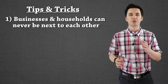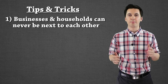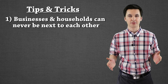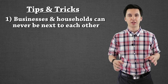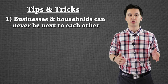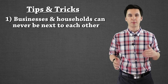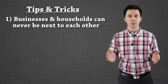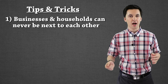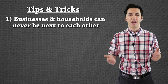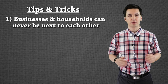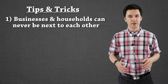Tip number one is to remember that businesses and households always have to be on opposite sides — they'll never be next to each other. So if a problem tells us that households are in a certain box, whatever box is opposite of it has to be the other one. Businesses and households are never next to each other.